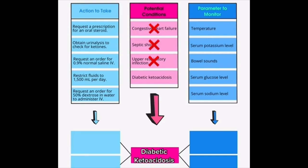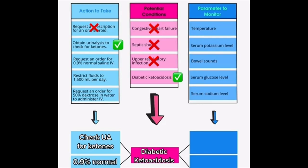The second step is to pick two actions to address this patient's condition. First, requesting a prescription for an oral steroid would actually be contraindicated since it would raise the blood sugar. Do we need a urinalysis to check for ketones? Of course, because in DKA there are extra ketones built up in the patient's blood that will eventually spill into the urine. Do we need to administer IV normal saline? Absolutely, because the priority with DKA is fluid repletion.